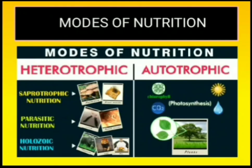Here you can see a chart representing modes of nutrition. In autotrophic nutrition, the example is green plants, which perform photosynthesis and can prepare their own food. Whereas in heterotrophic nutrition there is further sub-classification into three types: saprophytic, parasitic, and holozoic. We will discuss these further ahead.